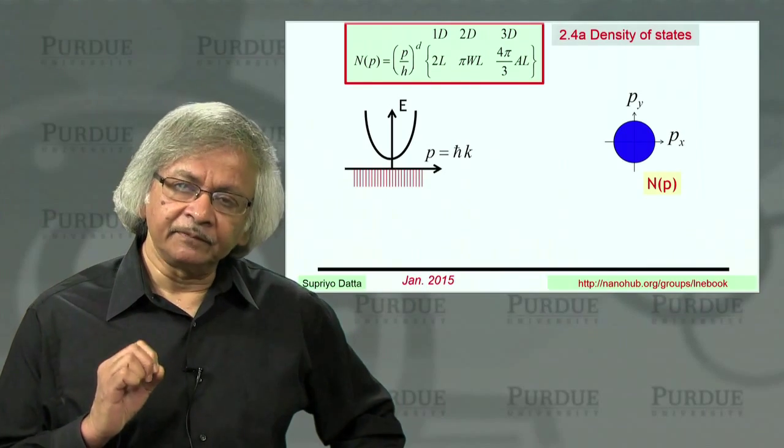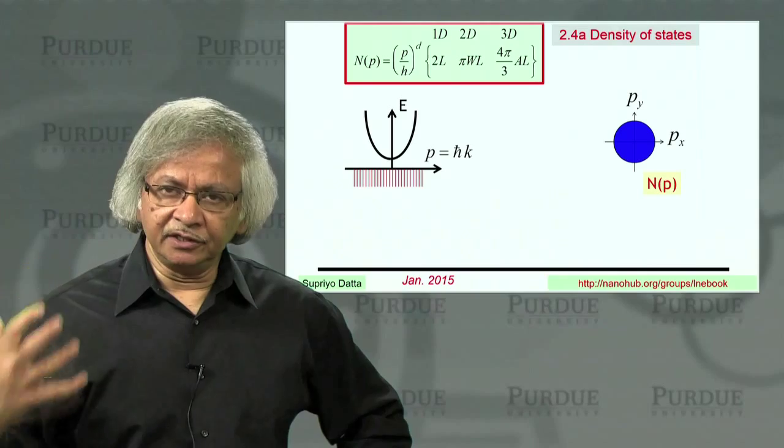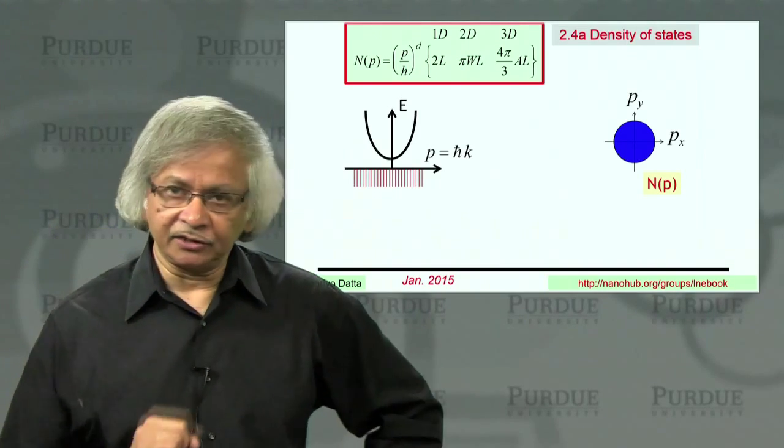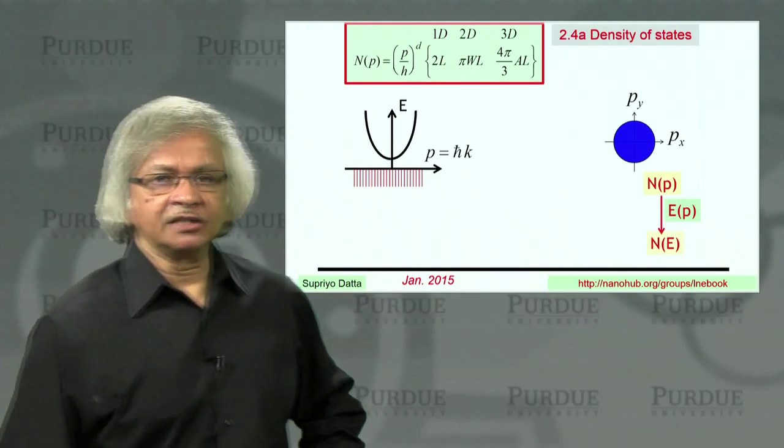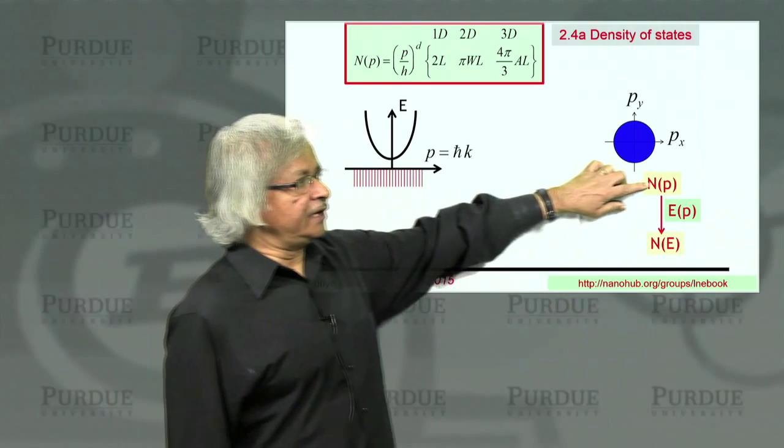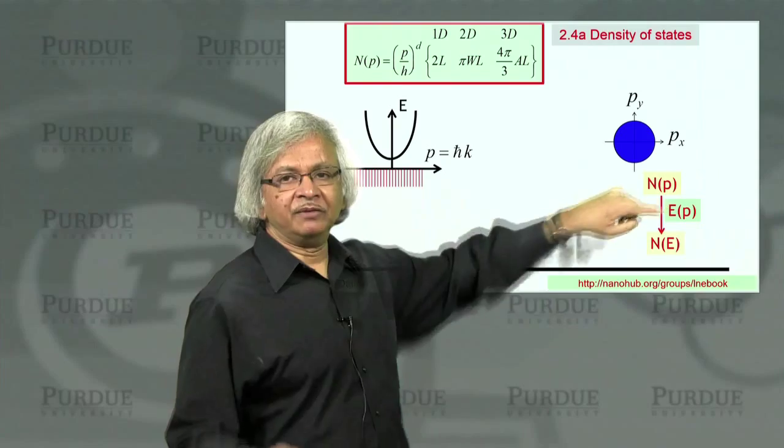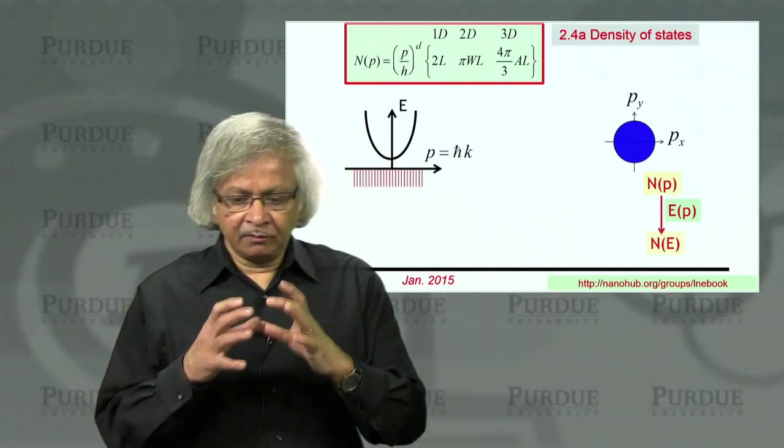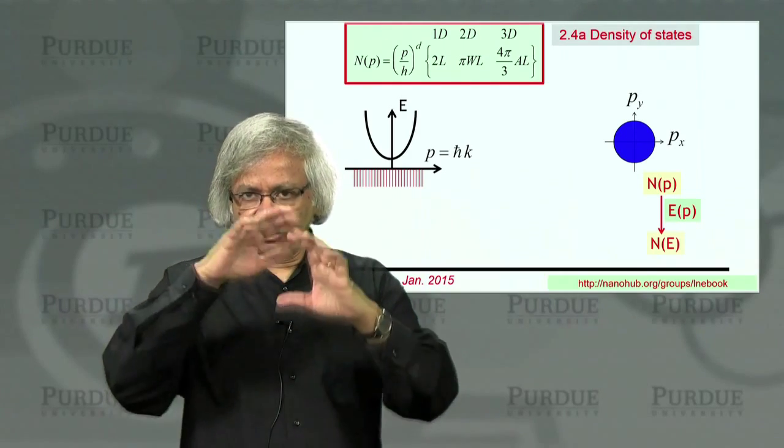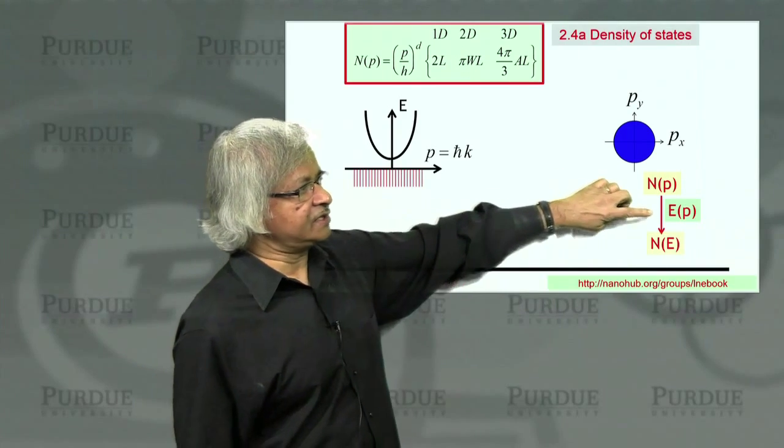What we want to do in this lecture is take this function and deduce the density of states from it. As I had mentioned before, you need an energy-momentum relation. Here we're assuming isotropic energy momentum, which means energy is the same for momentum in all directions, only depends on the magnitude of the momentum.